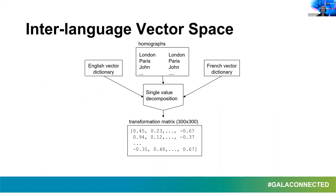We use a mathematical method of singular value decomposition. The goal of that method is to align two vector spaces. So we have the English vector space and the French vector space, for example, and then we have an artificial dictionary of homographs — words that are present in both vector spaces, like London, Paris, John — proper names that appear in both English and French vector spaces. We use them as information on how to align those two vector spaces. What we get is a so-called transformation matrix. Let me show it in a nicer picture.